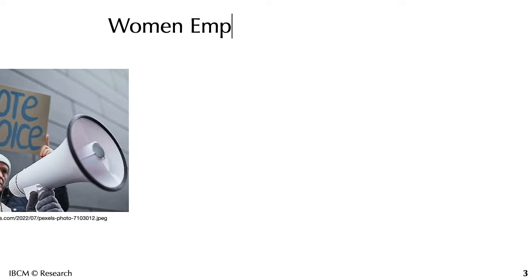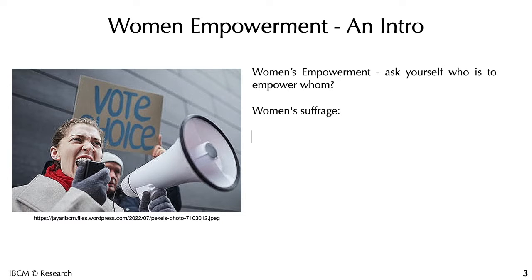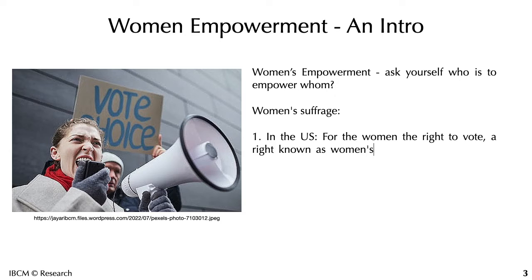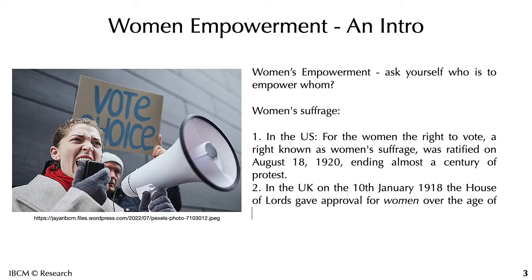Women empowerment — an intro. Ask yourself: who is to empower whom? Women's suffrage — number one: in the US, the right for women to vote was ratified on August 18th, 1920, ending almost a century of protest. Number two: in the UK, on 10th January 1918, the House of Lords gave approval for women over the age of 30 who met a property qualification to vote.